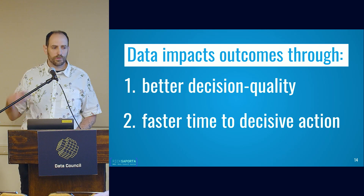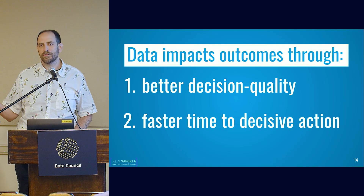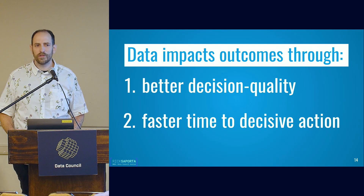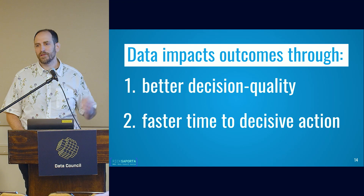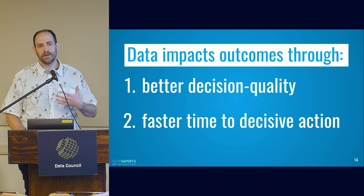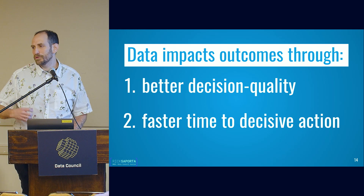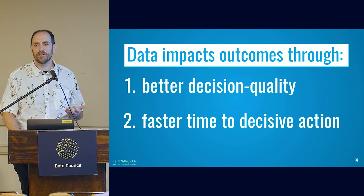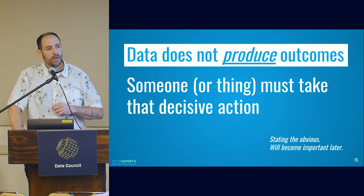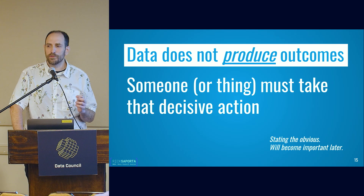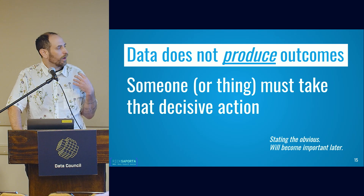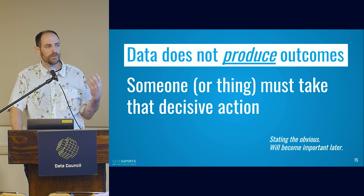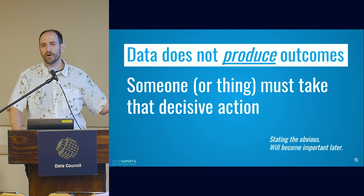So how does data actually impact outcomes? Two core ways: better decision quality and faster time to decisions. I have the opportunity to make a choice between A, B, C, and D on my own — I would have chosen C, but I look at the data and realize option B is actually much better. Or, I'm able to make that same decision even faster, with more confidence, getting to action sooner. And this is super important: data does not produce outcomes itself. There is no inherent value in data itself — we need that other part that comes with it afterwards.